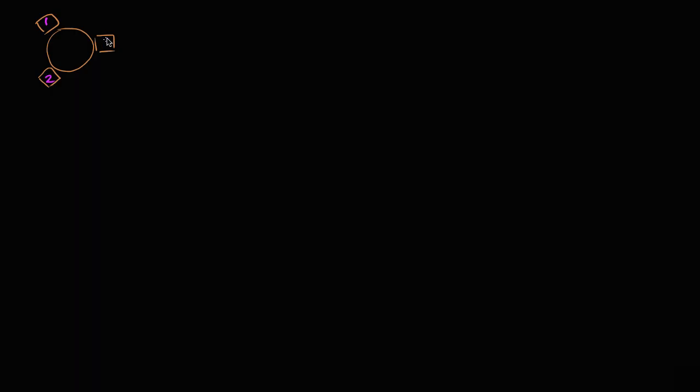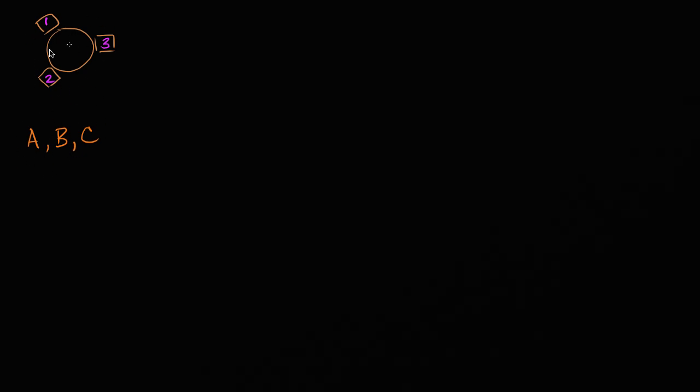Let's say we have a round table with three chairs around it — chair one, chair two, and chair three. There are three people who want to sit in these chairs: person A, person B, and person C. We want to count the number of ways these three people could sit in these three chairs.